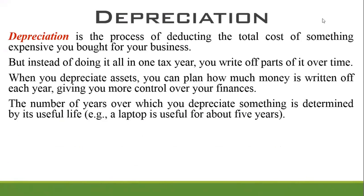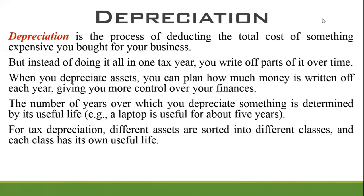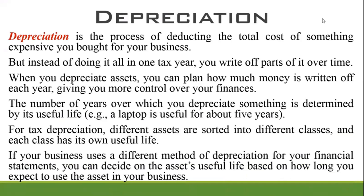The number of years over which you depreciate something is determined by its useful life — for example, a laptop is useful for about five years. For tax depreciation, different assets are sorted into different classes and each class has its own useful life. If your business uses a different method of depreciation for your financial statements, you can decide on the asset's useful life based on how long you expect to use the asset in your business.